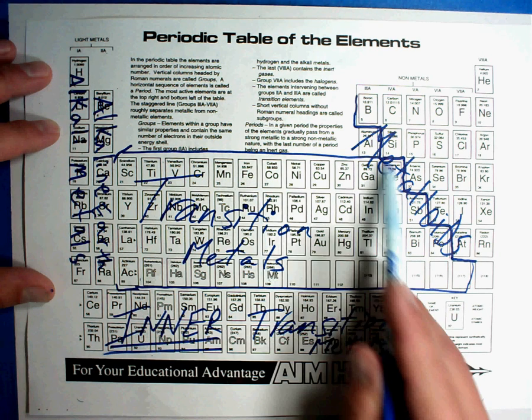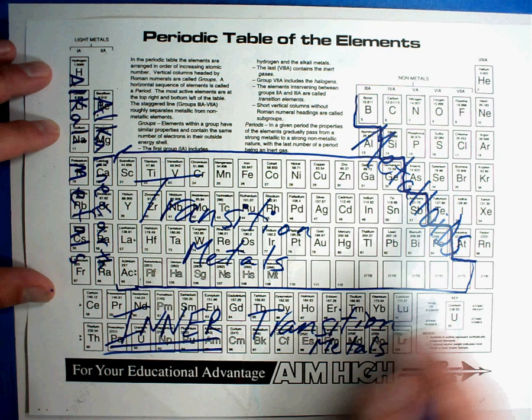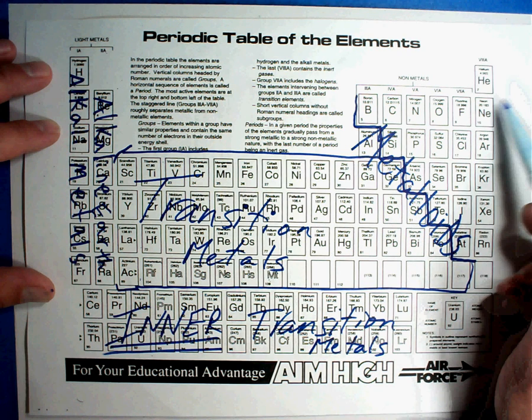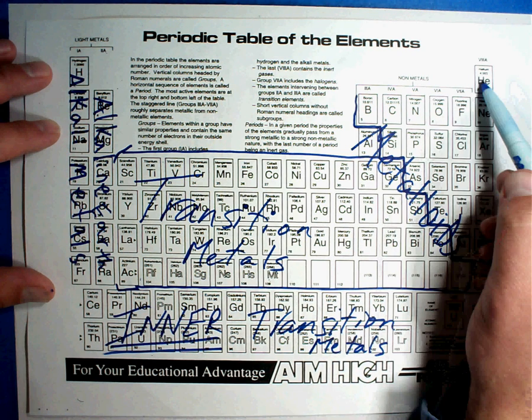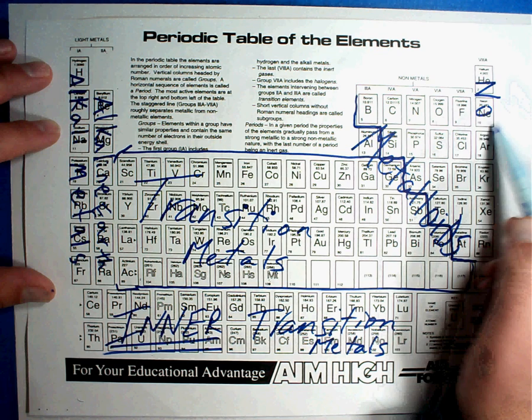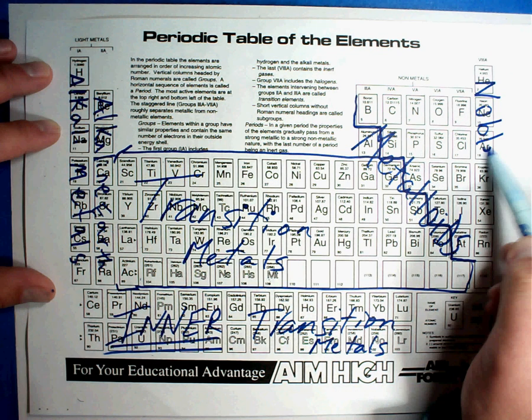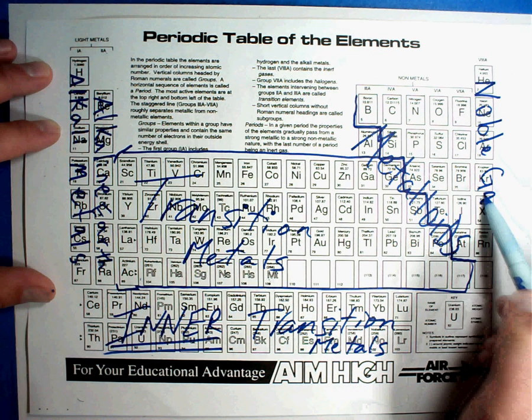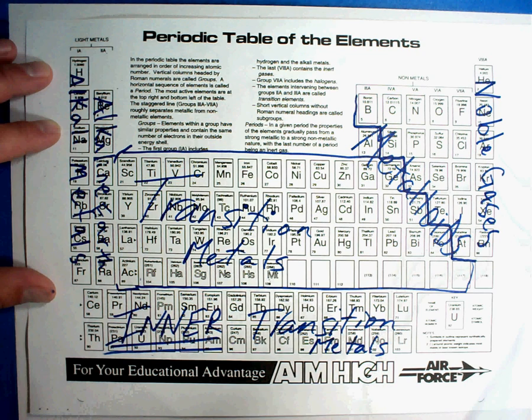I'm going to jump way over here to the right and then work my way in. This last column are called the noble gases. Noble gases. You can tell from the word, we didn't say metals this time. These are all gases all the way down.